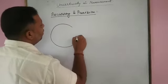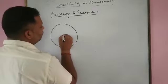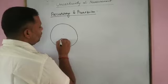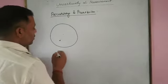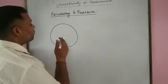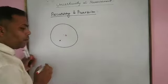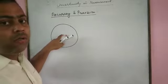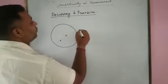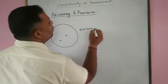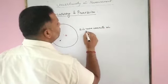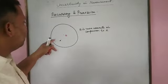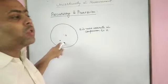Using a targeting analogy: the center is the true value. If student B targets closer to the center and student A does not, then B is more accurate. B is more accurate because it is more closer to the true value, whereas A is not as close as B.